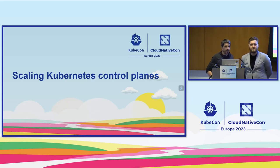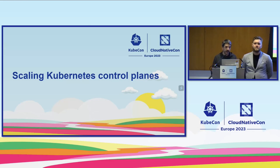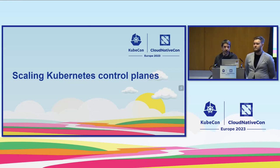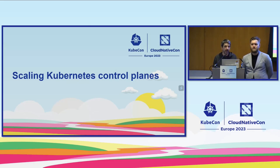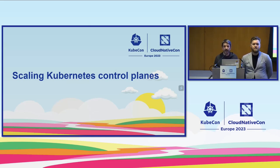To get started, we're going to talk about scaling the control planes. One of the reasons I can talk about it is because at Datadog we run a large number of very large Kubernetes clusters. To give you an idea, we have hundreds of clusters with between 1,000 to 6,000 nodes. As you reach thousands of nodes in a cluster, you start to find interesting challenges.